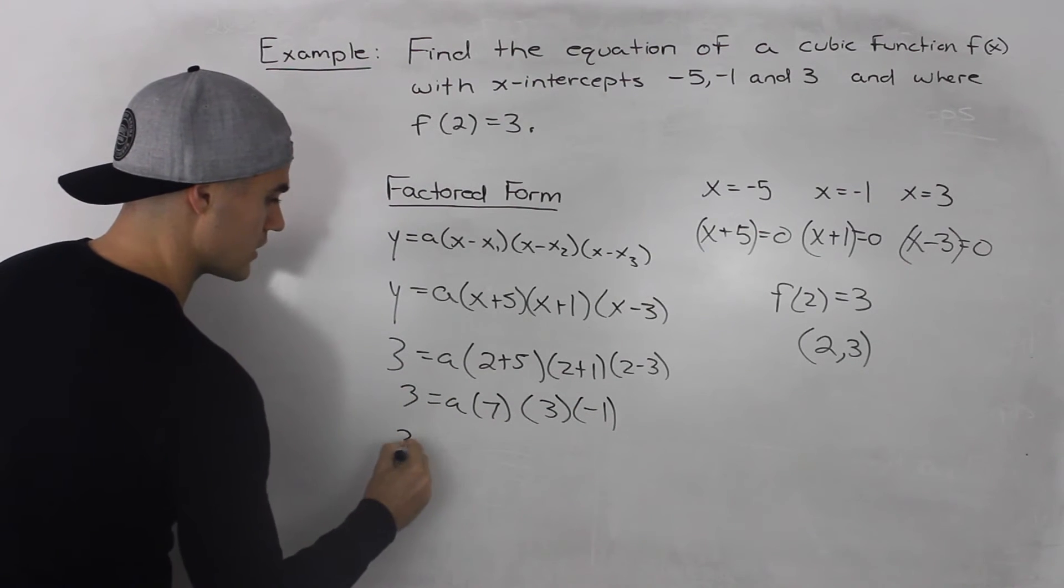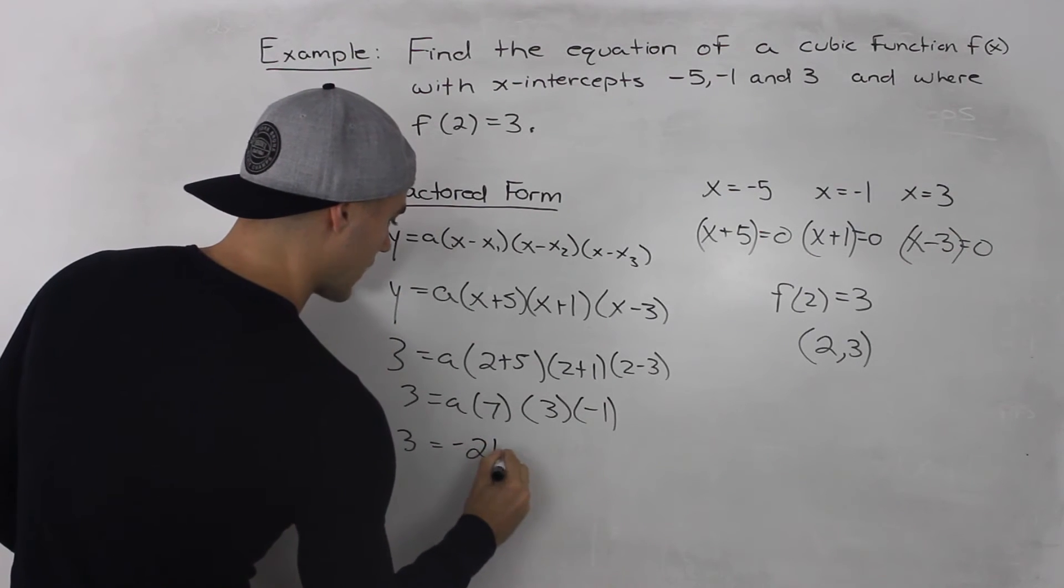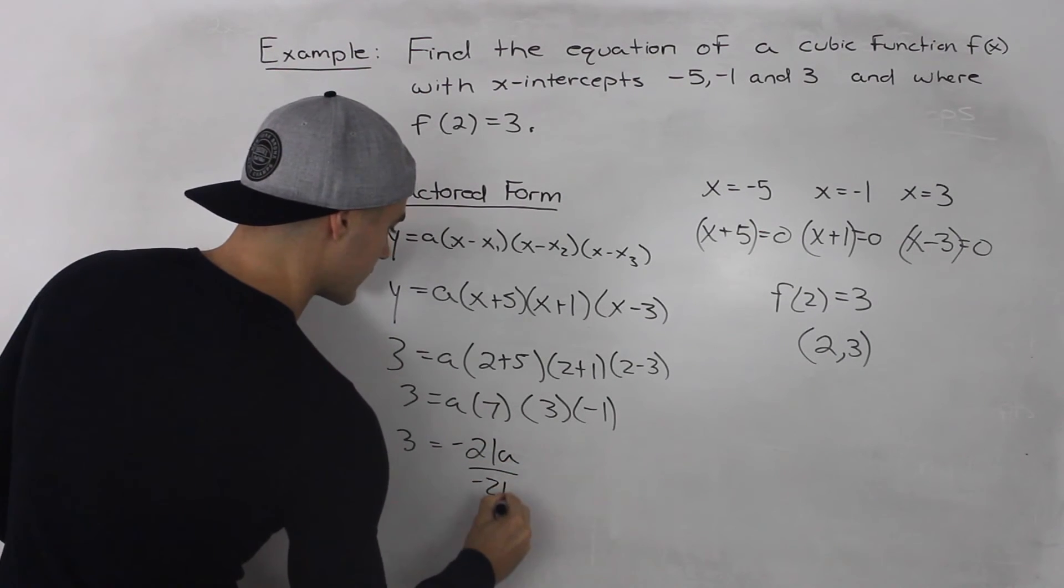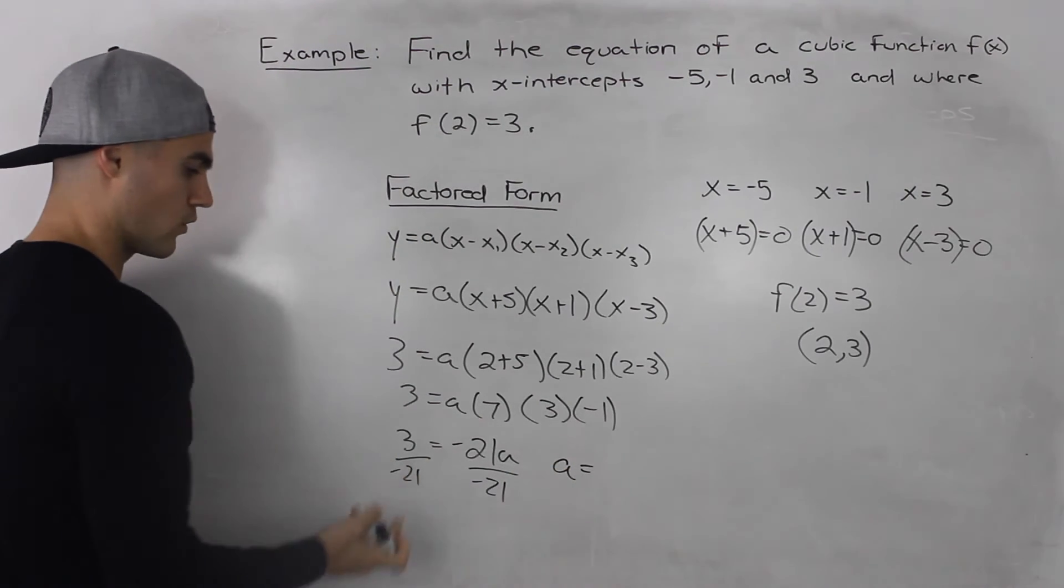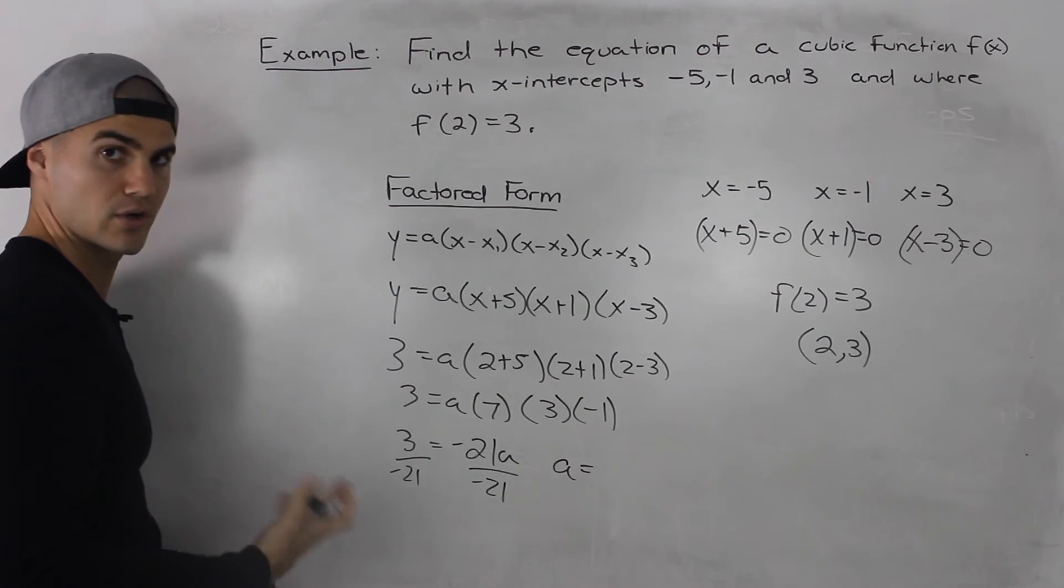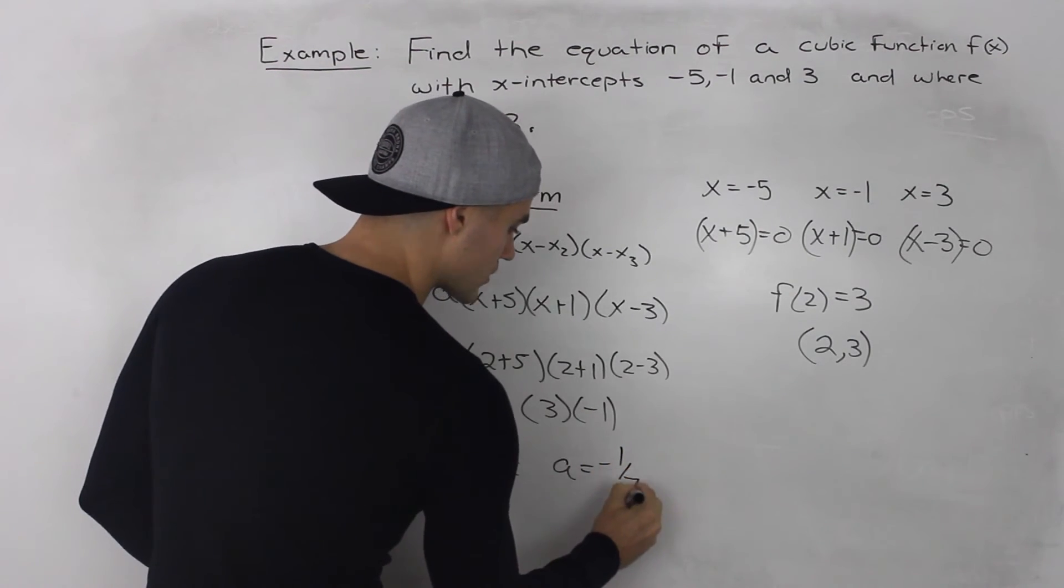So 3 = 7 × 3 × -1 = -21a. Divide by -21. So a = 3/-21, or -3/21. And that simplifies to -1/7.